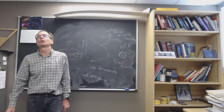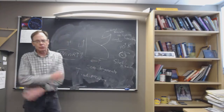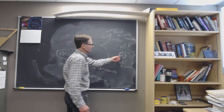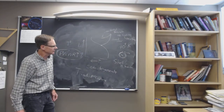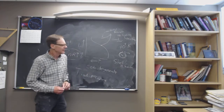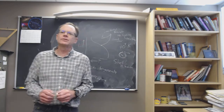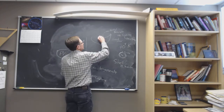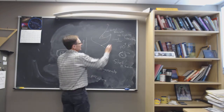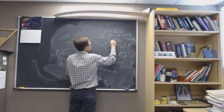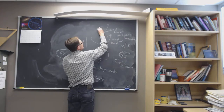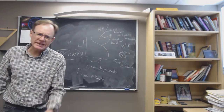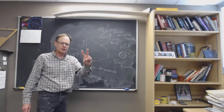The helium fusion stage doesn't last long at all — you don't see many helium-fusion stars because it's a very short-lived stage. Once all the helium fuses into carbon, you get an inert carbon-nitrogen-oxygen core very quickly, and shell fusion begins again, further out in the star. The star then climbs the asymptotic giant branch, or AGB. On the giant branch, then the horizontal branch, then the AGB.